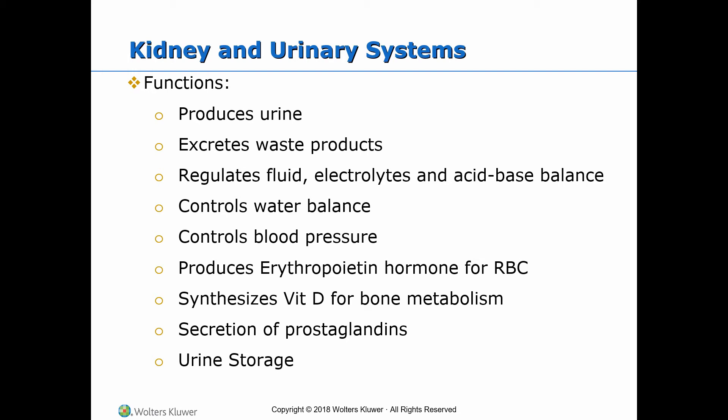Controlling blood pressure: this is maintained by the RAS. Failure of RAS results in hypertension and kidney failure. Production of erythropoietin hormone for red blood cells: anemia, arterial hypoxia, or inadequate blood flow causes the release of erythropoietin, which stimulates the bone marrow to produce red blood cells. In patients with chronic kidney failure, erythropoietin and iron are administered parenterally, as they cannot be produced by the kidneys.